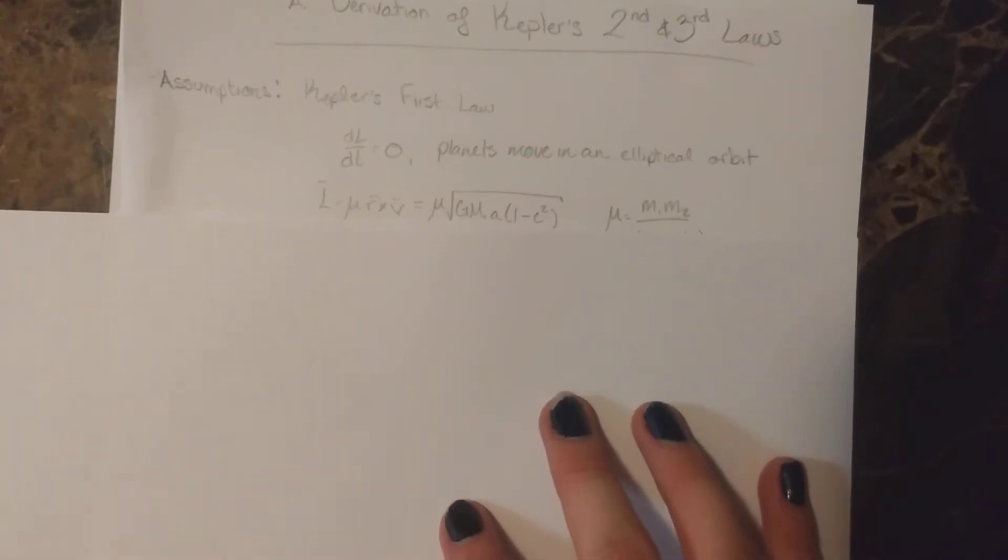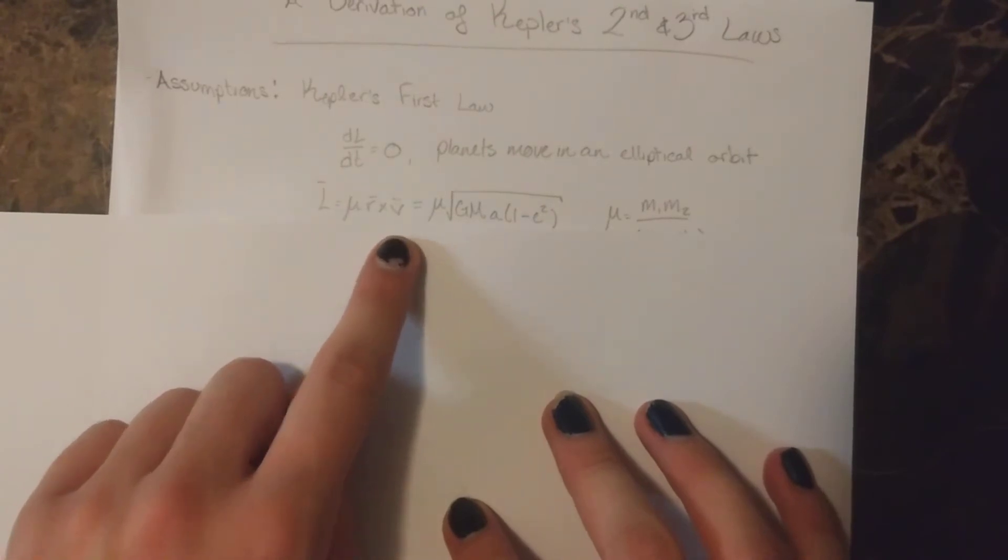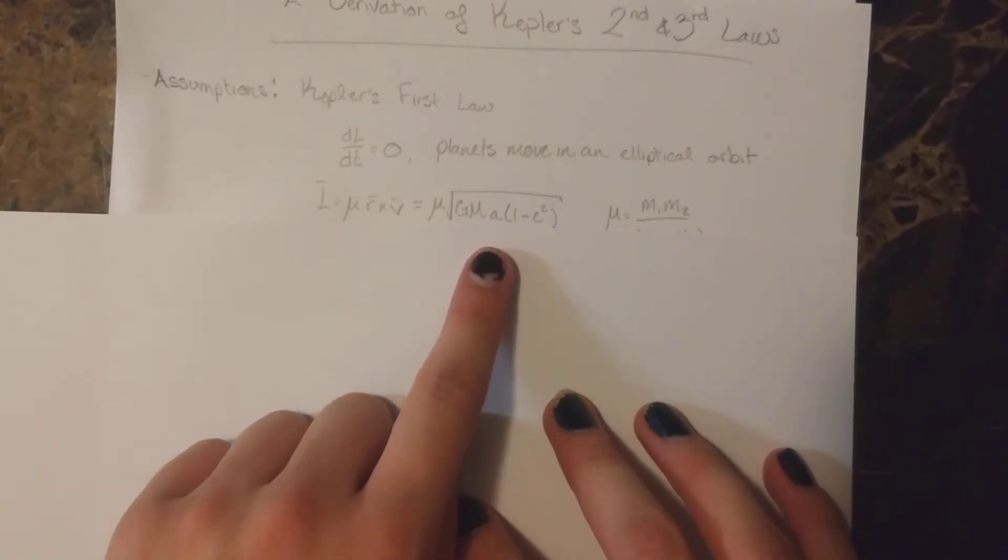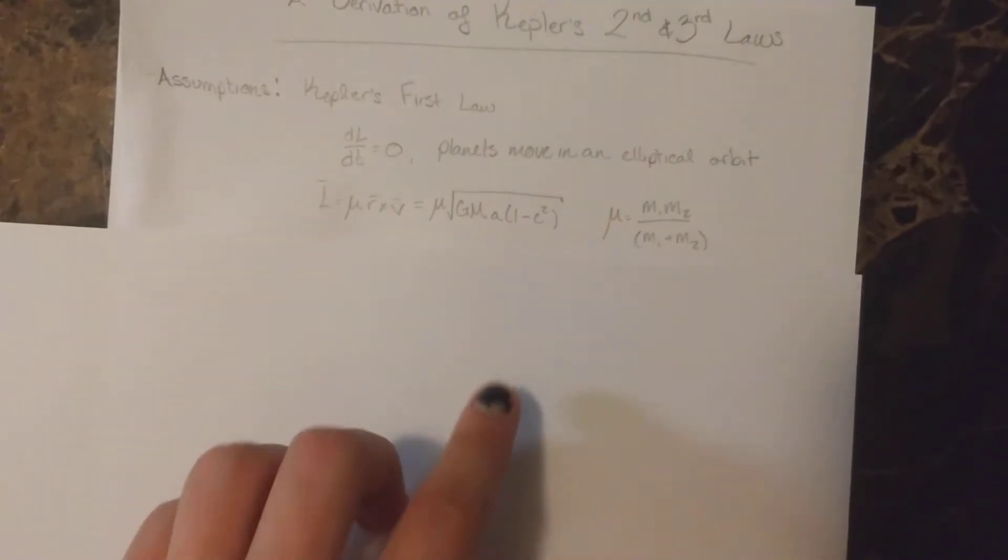We can also recall that the angular momentum is equal to the reduced mass mu times the cross product of the position with the velocity vectors. And the magnitude of that is mu times the square root of G times big M, times A, times the quantity of 1 minus E squared.